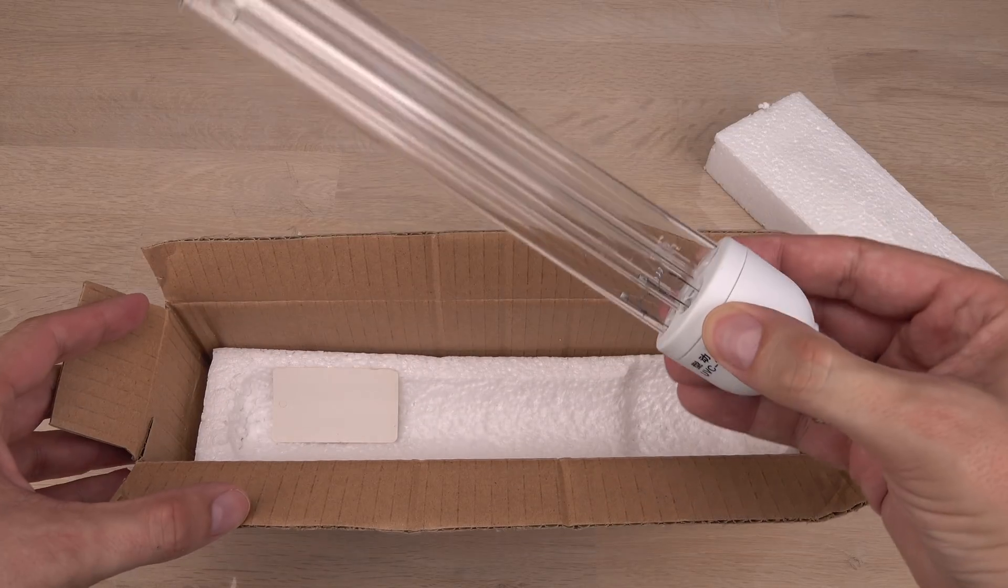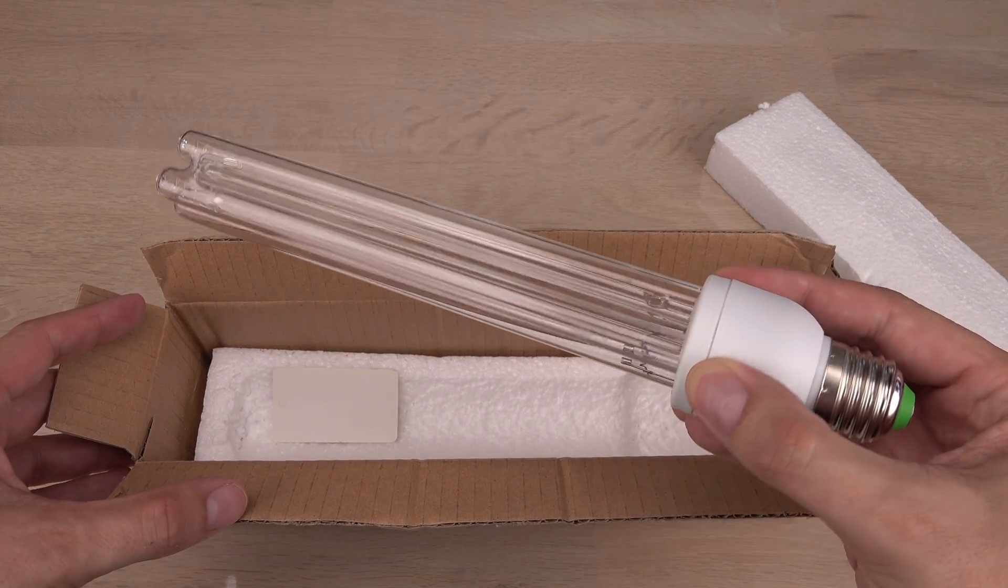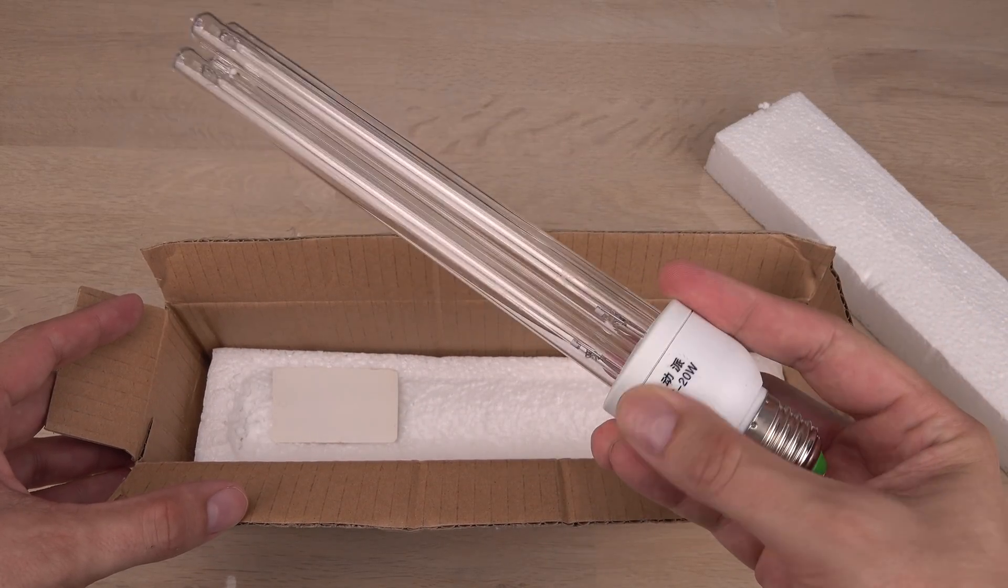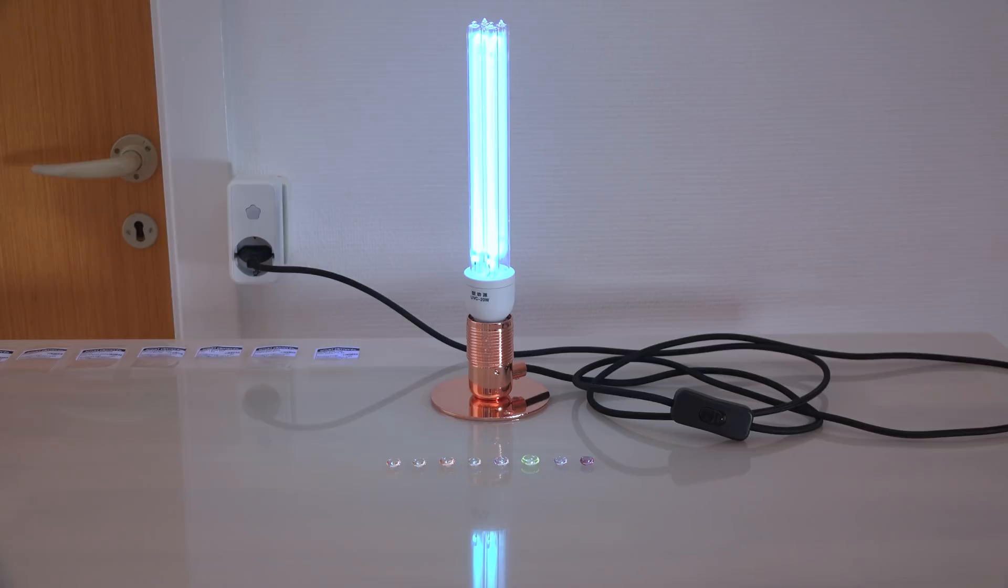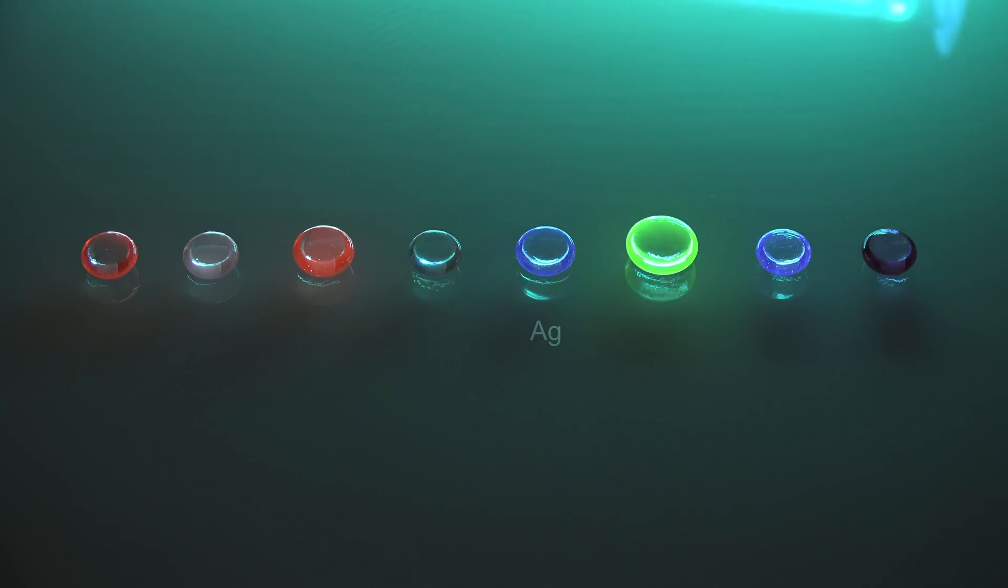I have this germicidal bulb which emits hazardous shortwave ultraviolet light. Also known as UV-C. With me out of the room, UV filter on the camera and a remote control on the lamp, we can safely test if it will make the silver glass bead fluoresce. Yes. I see some nice dark blue fluorescence.